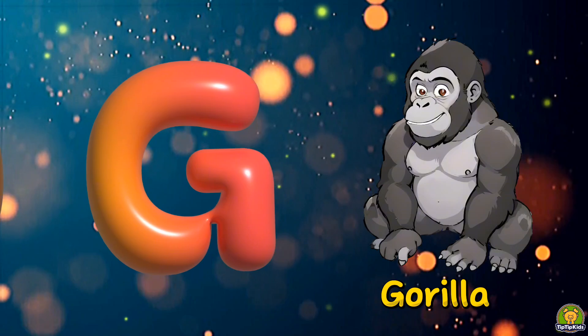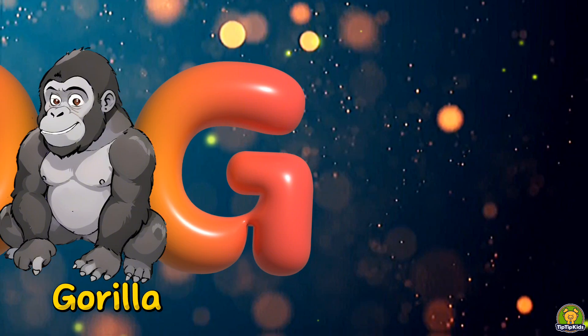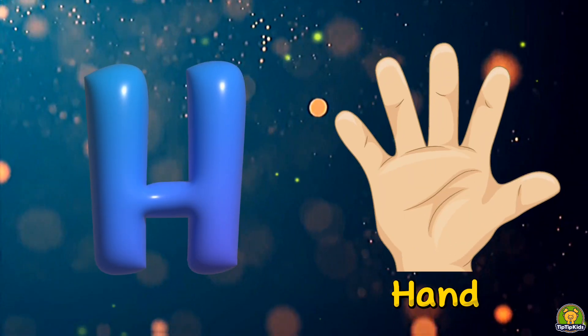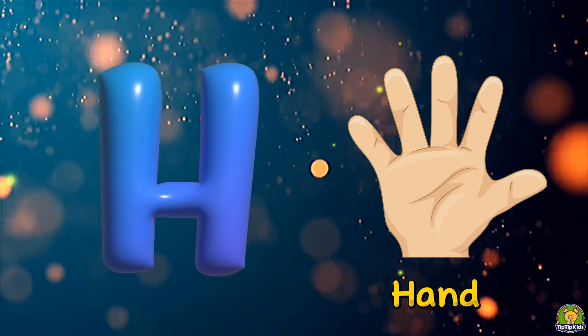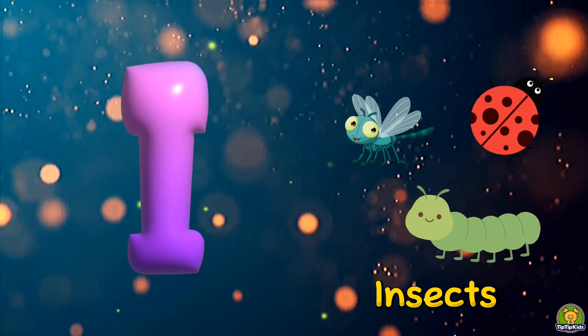G is for gorilla, g-g-gorilla, g-gorilla. H is for hen, hen, hen, hen. I is for insect, i-i-insect, i-insect.